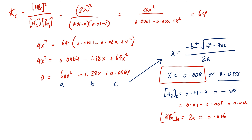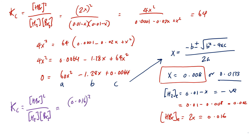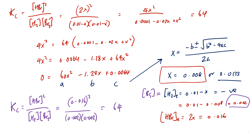We can verify by plugging into Kc: Kc equals 0.016 squared over 0.002 times 0.002, which gives 64 — confirming our answer. The equilibrium concentrations are: Br2 and H2 are both 0.002 molar, and HBr is 0.016 molar. That's how you solve ICE tables for chemical equilibria. Thanks for watching.